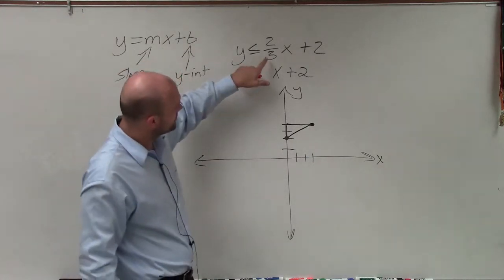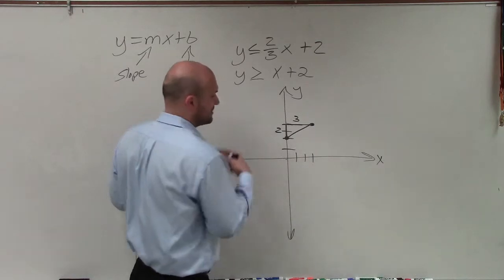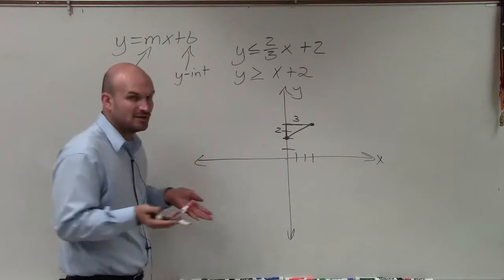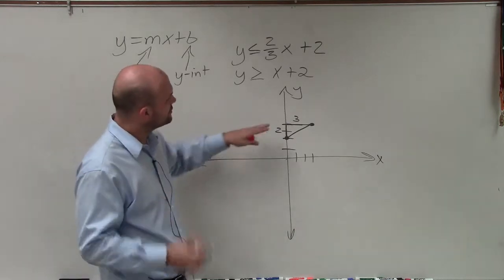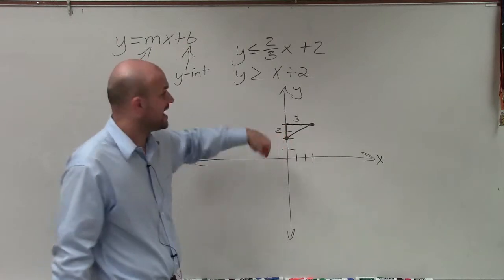And the slope takes me to my next point. Now, it's very important to understand, you also could have gone down 2 to the left 3, which would have given you another point on the line. But we only need two points to create a line.